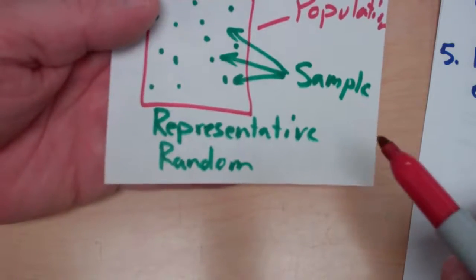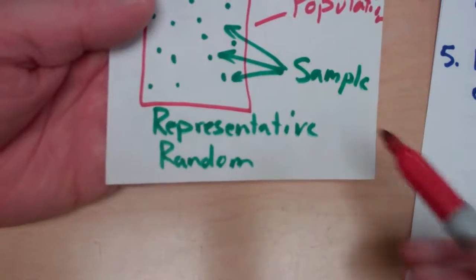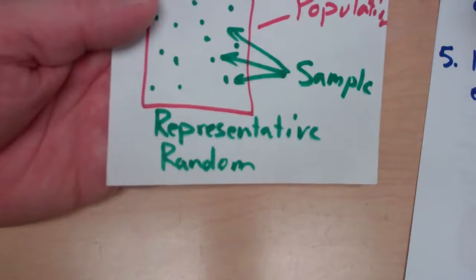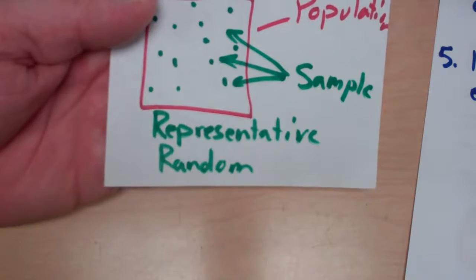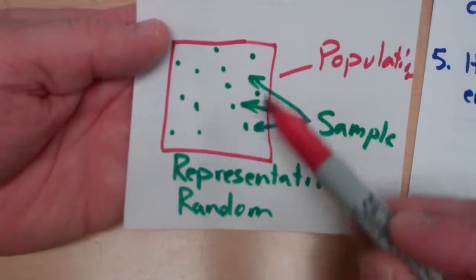And then it needs to be chosen randomly. So, again, I can't just choose my three best friends because it's not random. I need some way of choosing the sample in a random way so I get a representative group that would represent my entire population well.